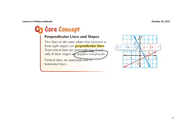Okay, perpendiculars form a right angle, that means a 90 degree angle, and their slopes are negative reciprocals. Vertical lines are perpendicular to horizontal lines.